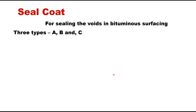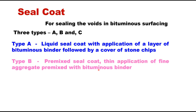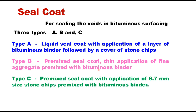There are three types of seal coat for sealing the voids in bituminous surfacing: Type A, B, and C. Type A is a liquid seal coat — a layer of bituminous binder is applied followed by a cover of stone chips. Type B is a premixed seal coat with a thin application of fine aggregate premixed with bituminous binder. Type C is also a premixed seal coat using 6.7 mm size stone chips premixed with bituminous binder; the difference from Type B is the aggregate size — Type B uses only fine aggregates, whereas Type C uses 6.7 mm and down stone chips.